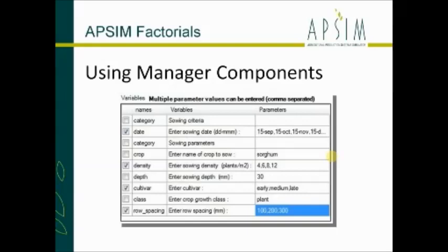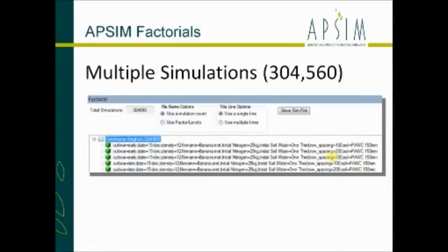That list is read out from that manager node. What we can do then is use the checkbox to say we want to use that variable, and we can use a comma-separated list to add the different parameters we want to use. Similar to how we had four soils before, if you look at the sowing date we've set up five sowing dates. That was just to show it actually works - set that one up and there are 300,000 simulations set up in that tree.